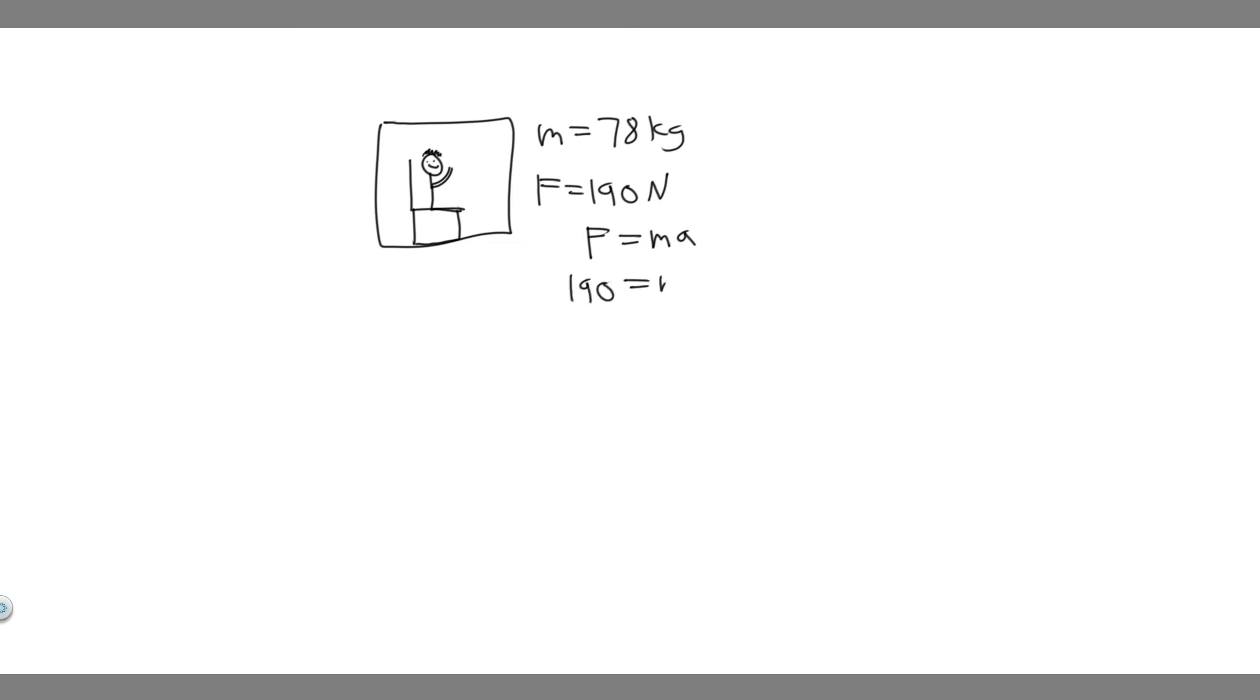So 190 is going to be equal to your mass times your acceleration. And if we want to find the acceleration, what you can do is just divide by m. So 190 divided by your mass, and we know the mass is 78.